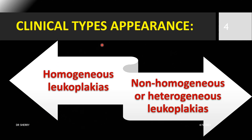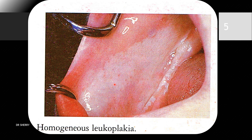Moving on to clinical types of leukoplakia, which are homogeneous and non-homogeneous, which I have already mentioned before. Homogeneous leukoplakia appears the same clinically, while heterogeneous leukoplakia is a mix of red and white.